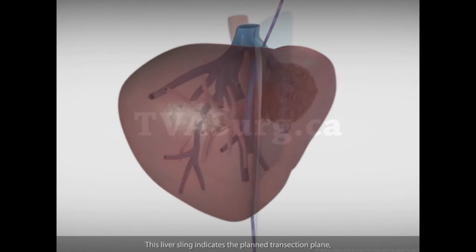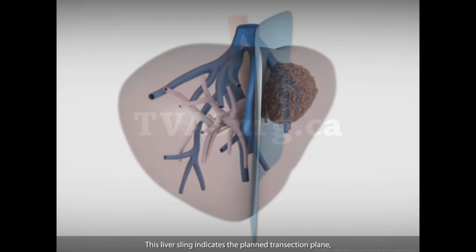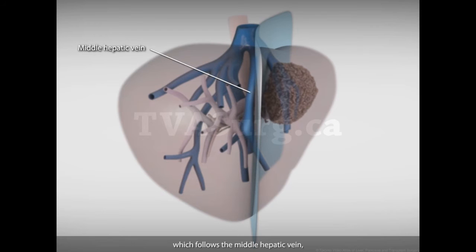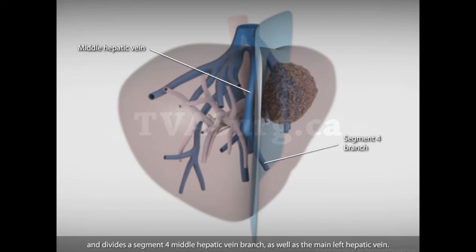This liver sling indicates the planned transection plane, which follows the middle hepatic vein and divides a segment 4 middle hepatic vein branch, as well as the main left hepatic vein.